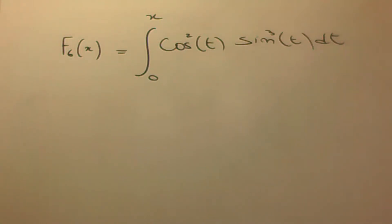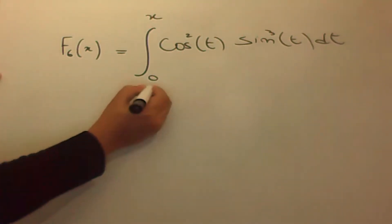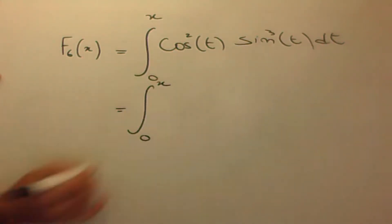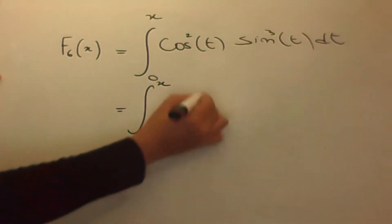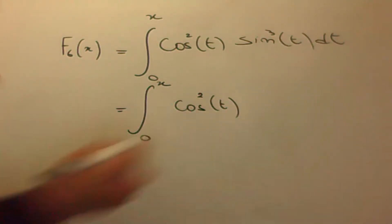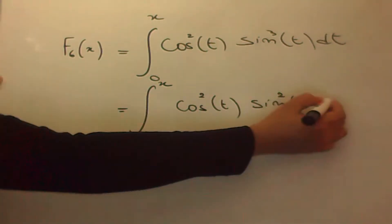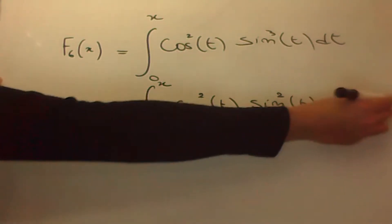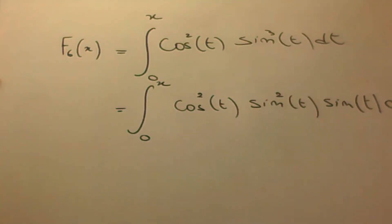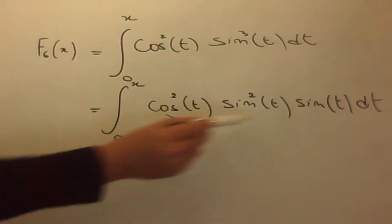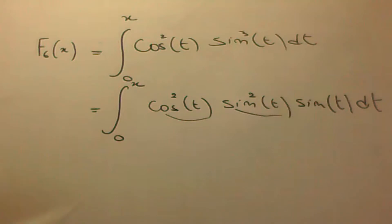Je vais maintenant réécrire cette intégrale. Je peux écrire ça comme l'intégrale entre 0 et x de cosinus au carré de t fois sinus de t dt. On a la fonction cosinus au carré, sinus au carré et sinus de t dt.